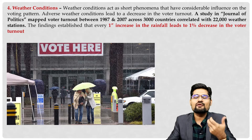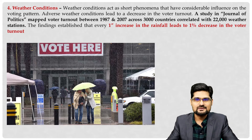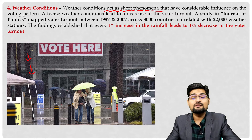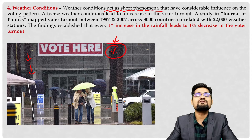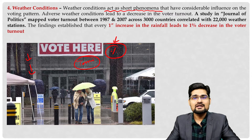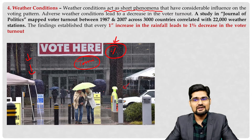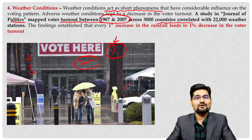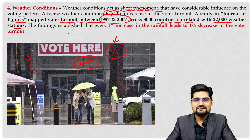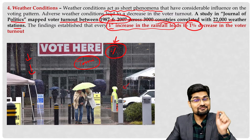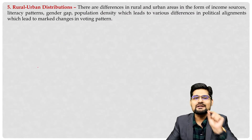The influence of local weather conditions also plays a role. On a heavy rainy day, voter footfall will considerably change. Weather conditions act as a short-term but definite influencing phenomenon because they affect the percentage of voting in an area. Terrain, local conditions and transport conditions are also important. A study in the Journal of Politics mapped voter turnout between 1987 and 2007 across 3,000 counties correlated with 22,000 weather stations, finding that every one-inch increase in rainfall decreased voter turnout by one percent.